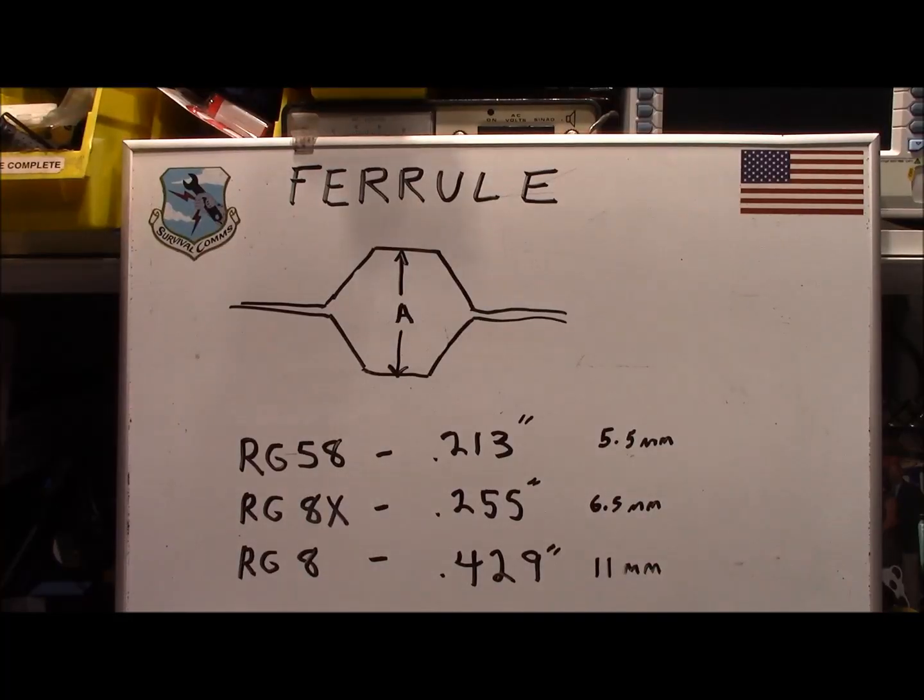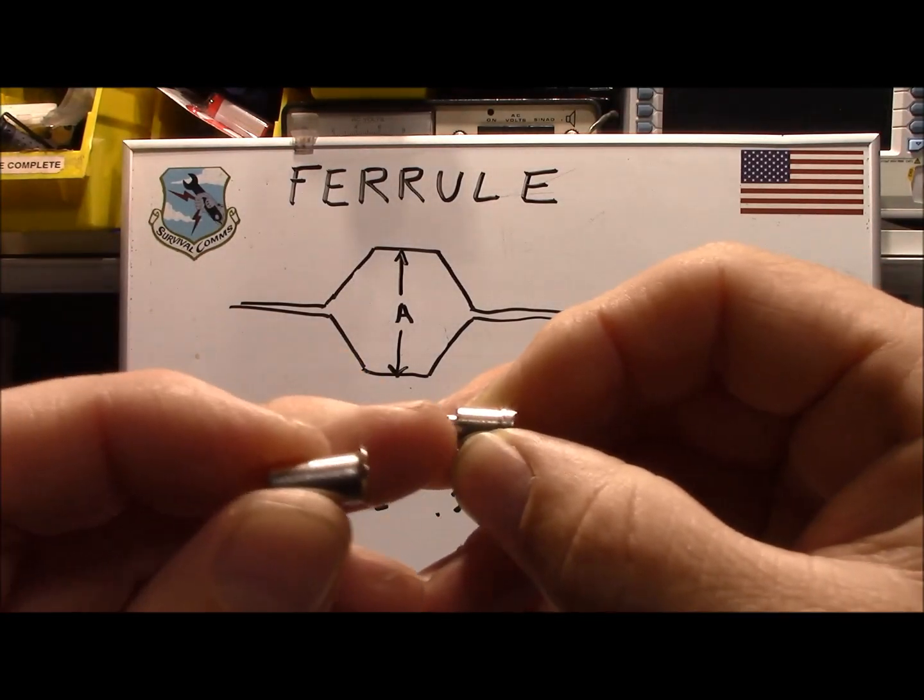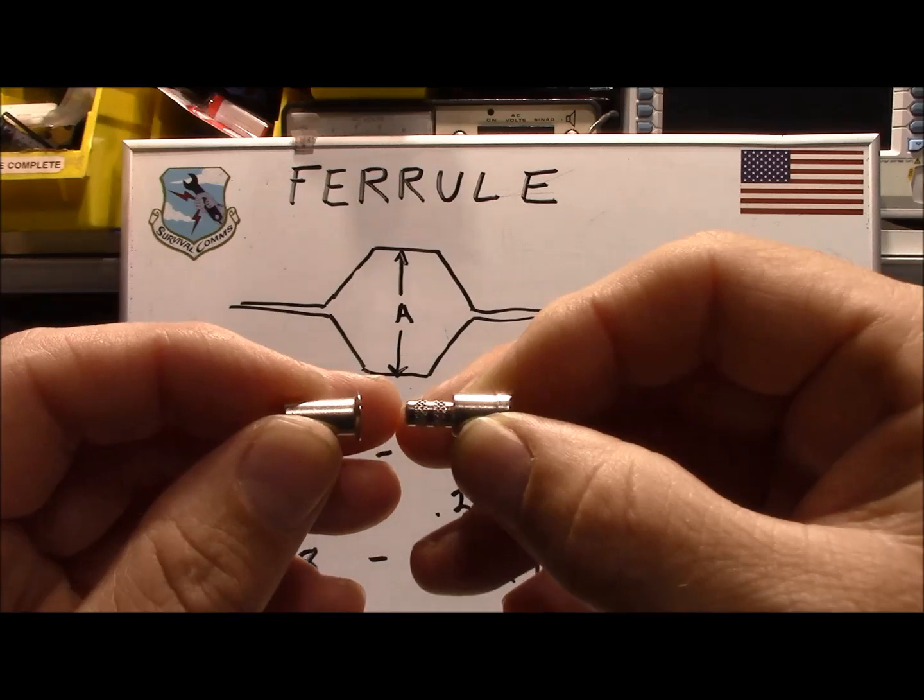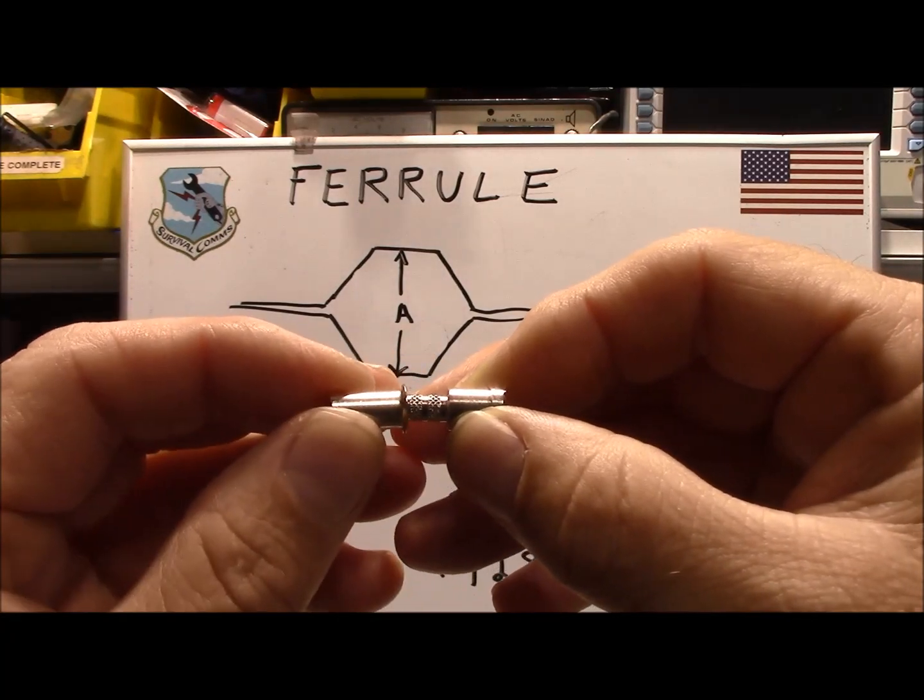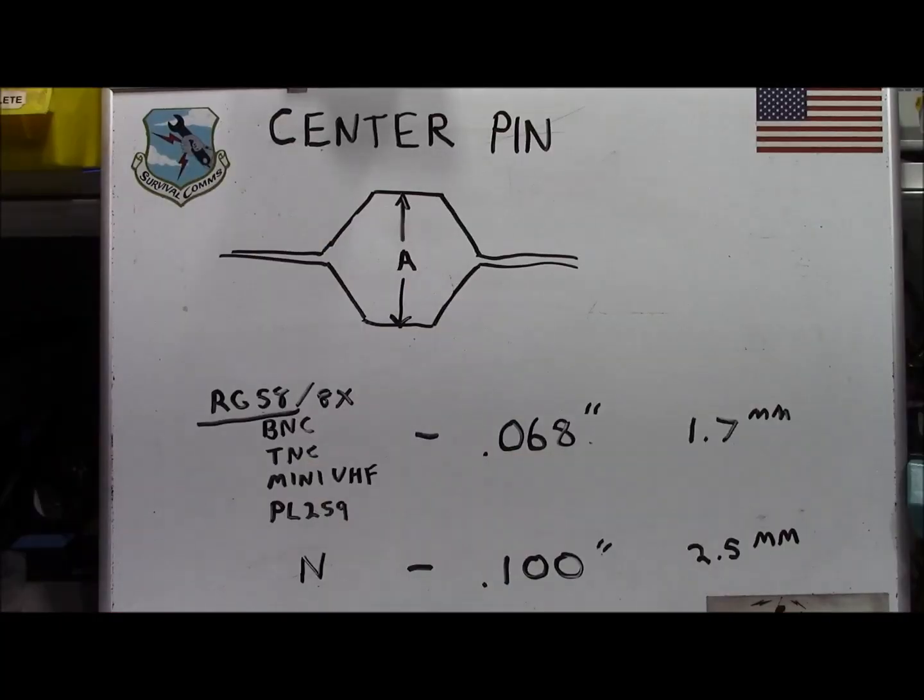The dimensions of the hex die cavities that you're going to be utilizing for these more generic types of 50 ohm RF cable are as follows. And what we're working with here is the ferrule where we sandwich the shield between the connector body and the ferrule and apply a crimp on the ferrule. And here are the sizes that are needed for your center pin crimp cavity for your crimping plier.